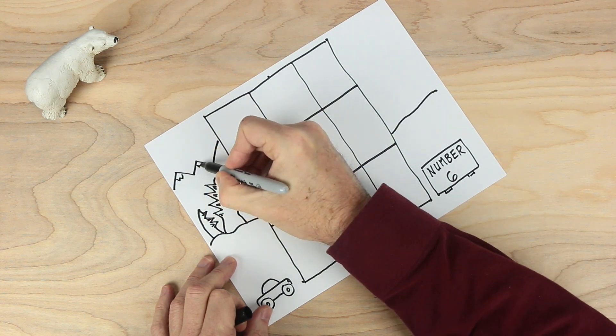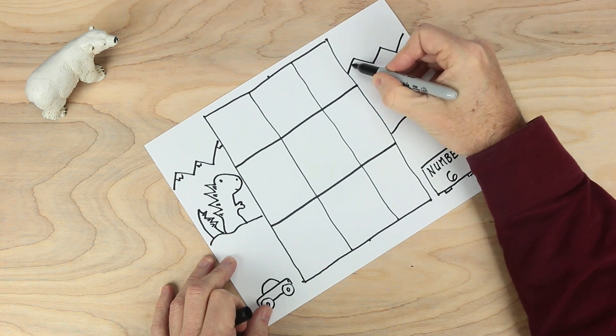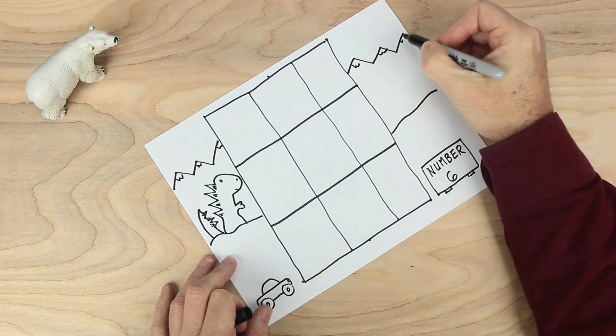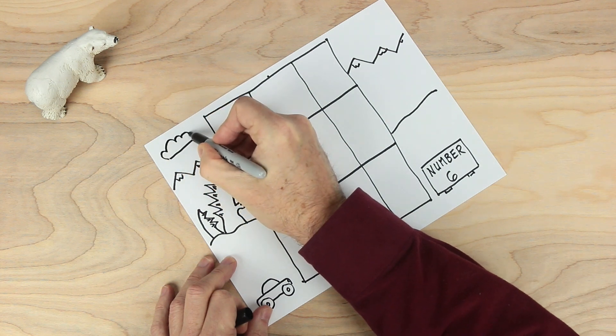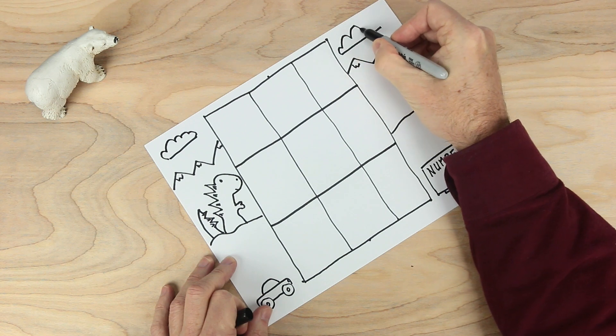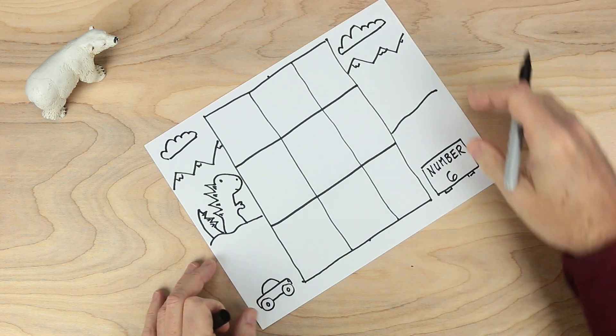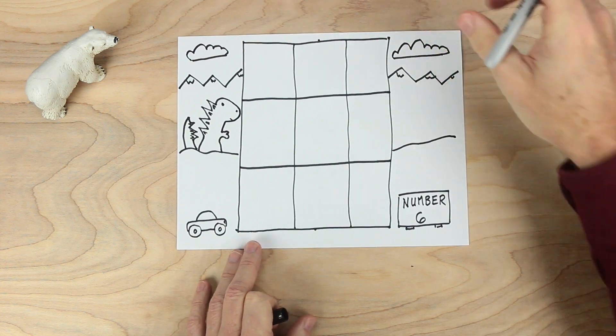A little bit of snow, snow on both sides. And one last thing. Over here as well. Okay. And this is our game board for the game called number six.